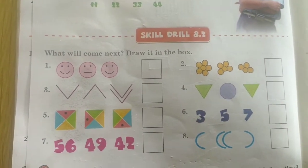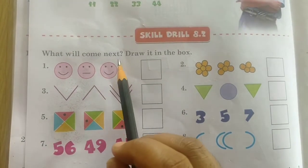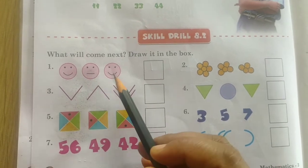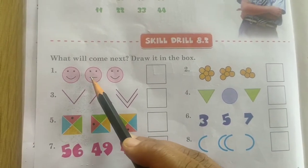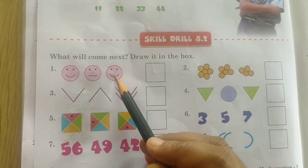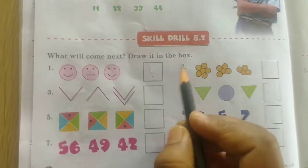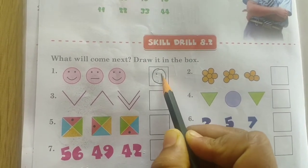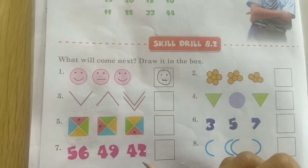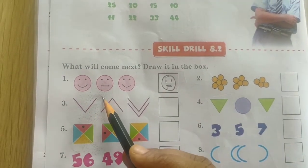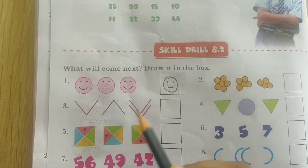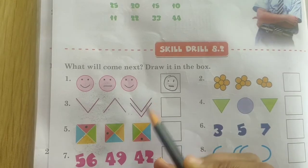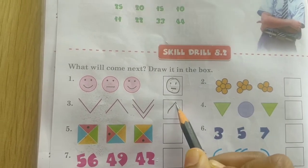Now comes Skill Drill 8.2. What will come next? Draw it in the box. See now the smiley faces they have drawn. First one is smiling. This is straight line. Now this is again. Which will come now over here? Again, this will come. Now see, one, two. And now this is, one is upside and downside they have done. Now this is there. How it will come? Both the sides downside will come.